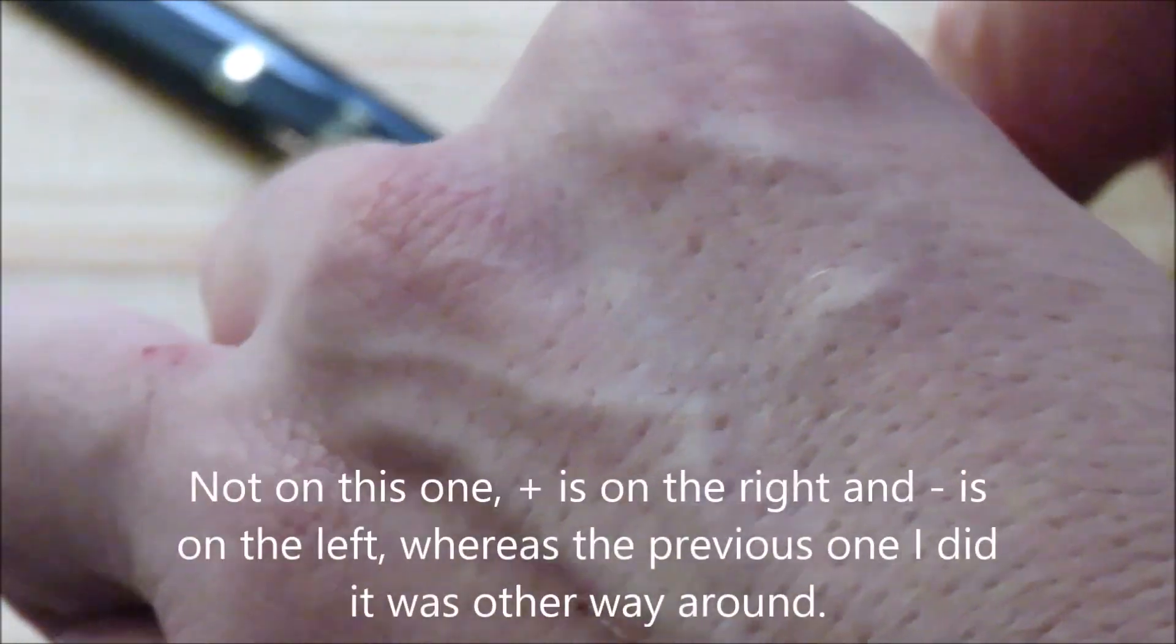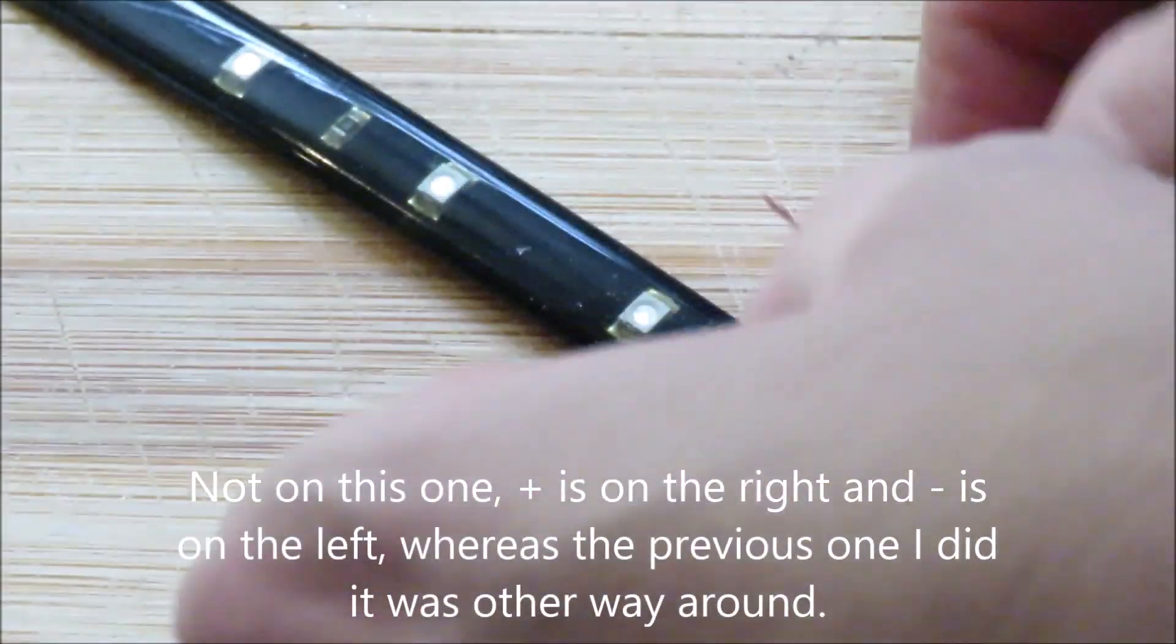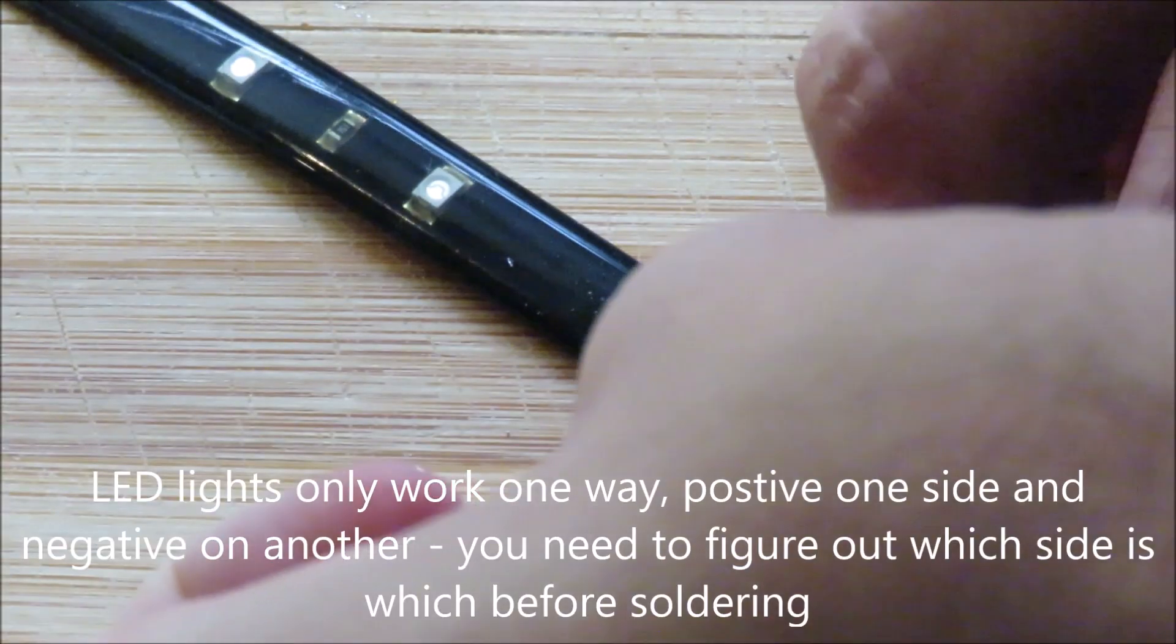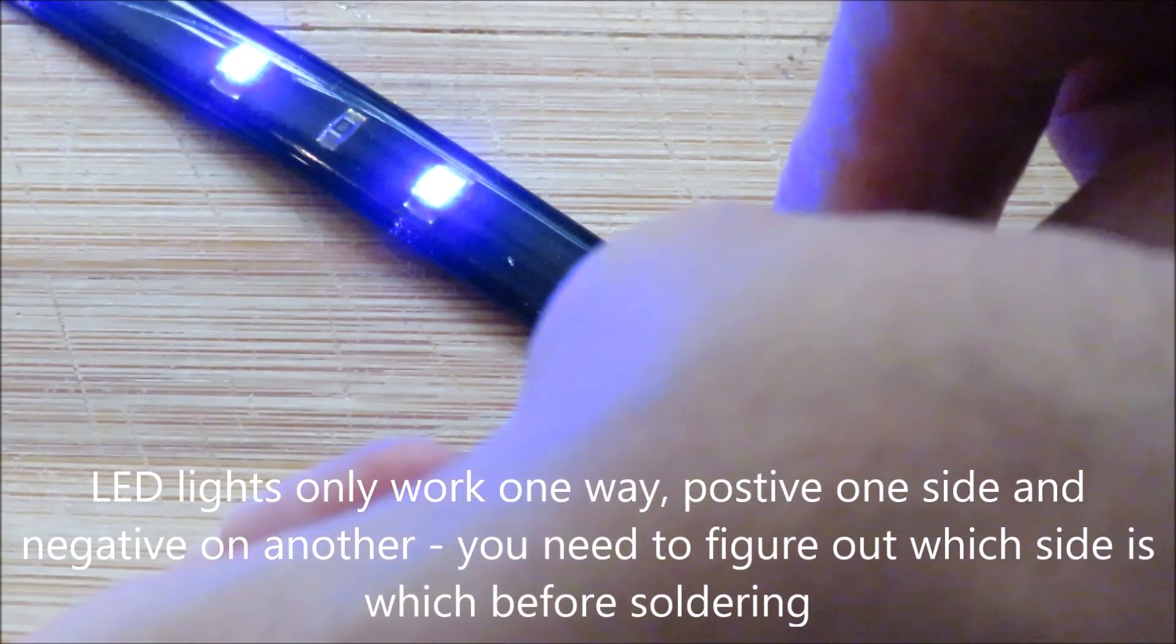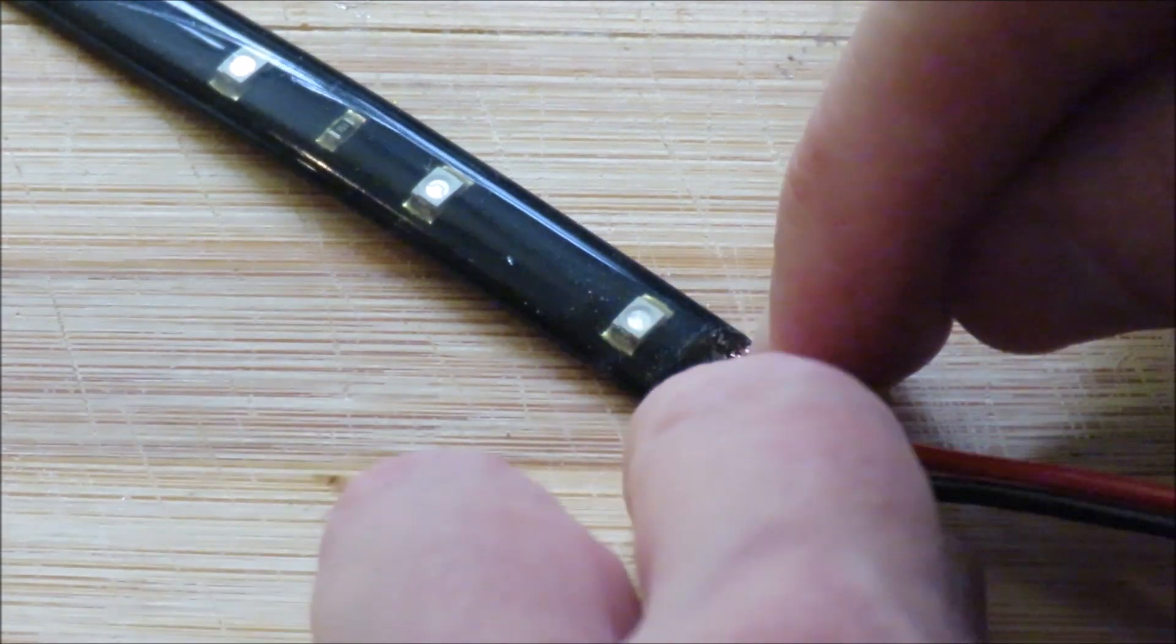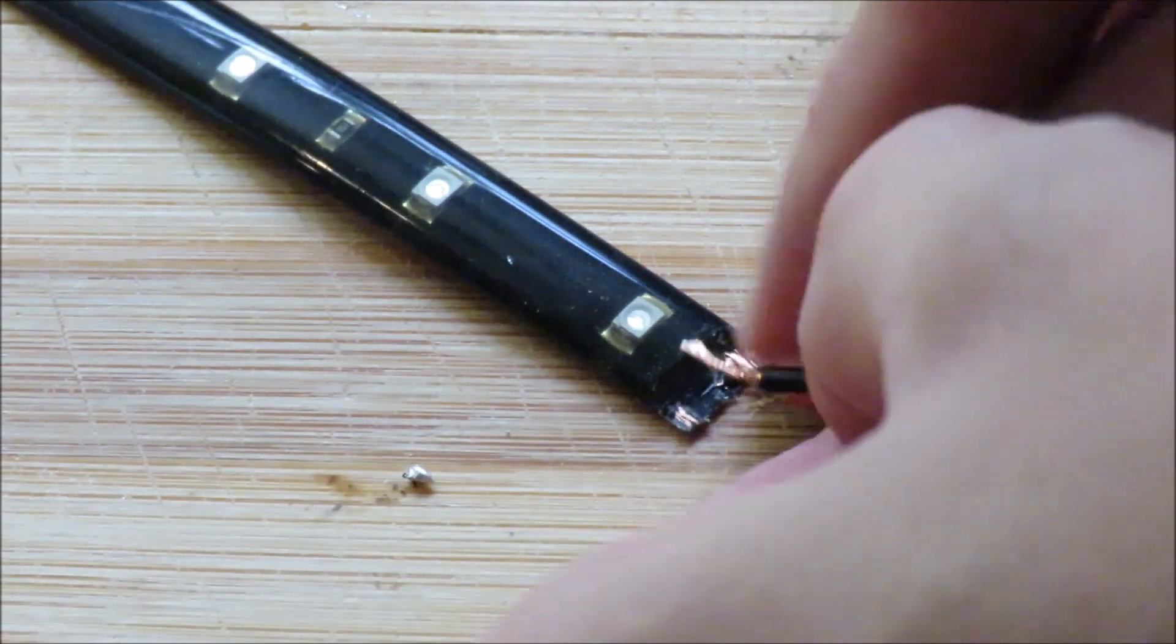So we've got to get it on... Nope. So that's not working and let's turn the wires around. The positive is actually on the right and ground is on the left.